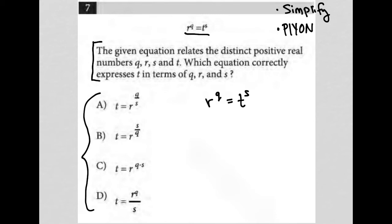So let's check this out. It might be some combination of the two things or something very different that I don't know until I read. The question says the given equation relates the distinct positive real numbers q, r, s, and t. Which equation correctly expresses t in terms of q, r, and s?